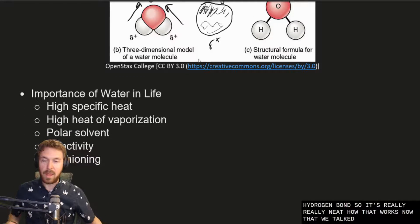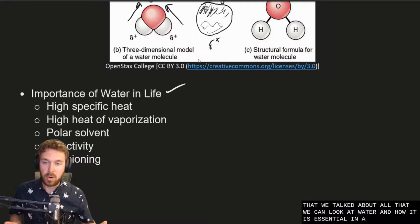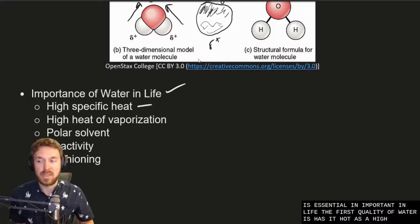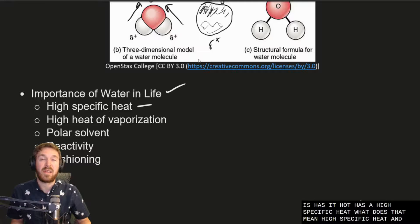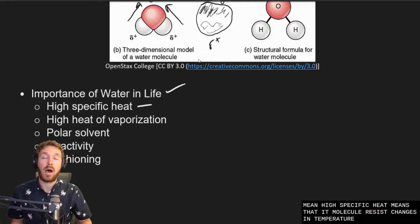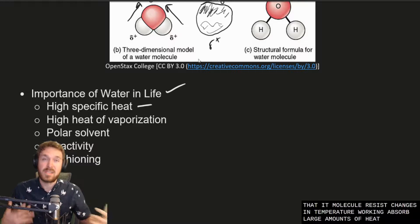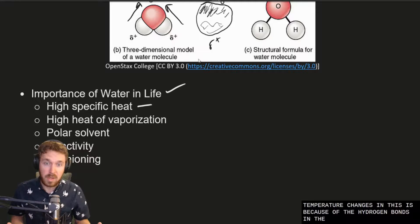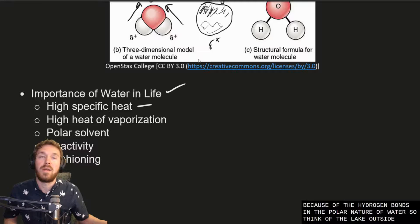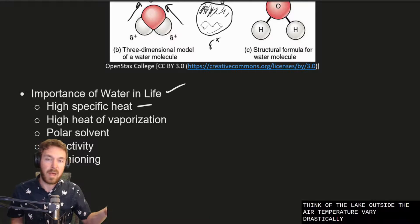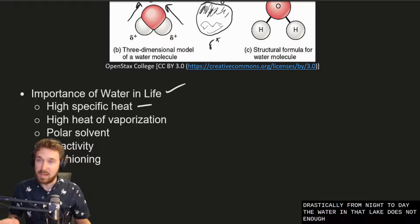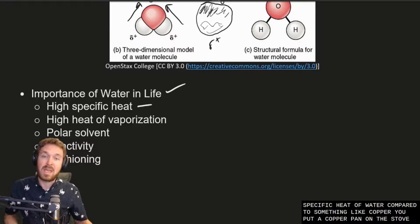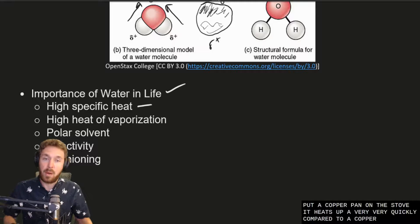Now that we've talked about all that we can look at water and how it is essential and important in life. The first quality of water is has a high specific heat. What does that mean? A high specific heat means that it molecule resists changes in temperatures or it can absorb large amounts of heat until the temperature changes. And this is because of the hydrogen bonds in the polar nature of water. So think of the lake outside. The air temperature varies drastically from night to day. The water in that lake does not. And that's because of the high specific heat of water compared to something like copper. You put a copper pan on the stove it heats up very very quickly compared to a copper pan with water in it.